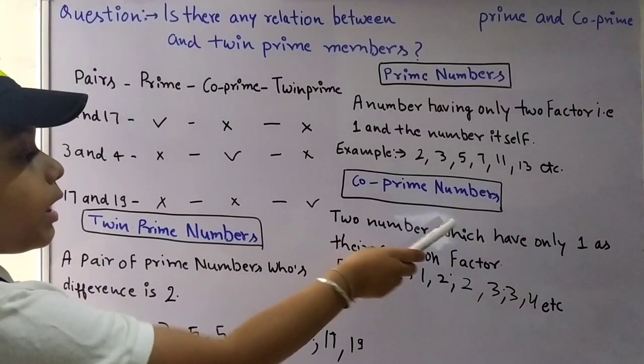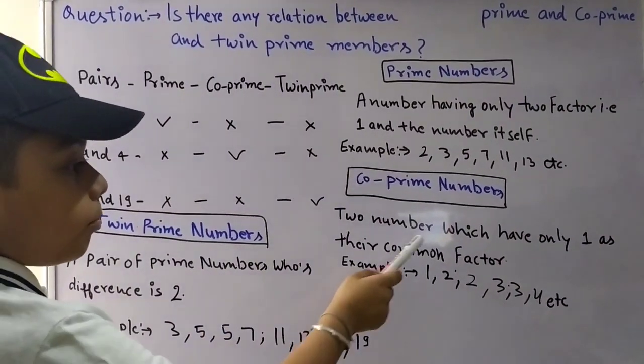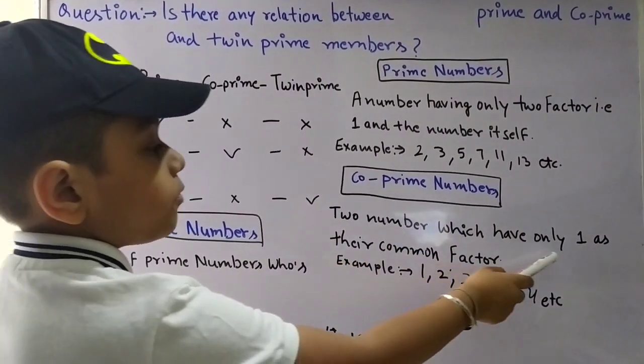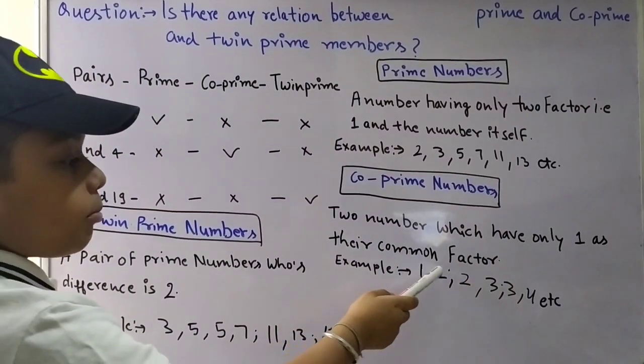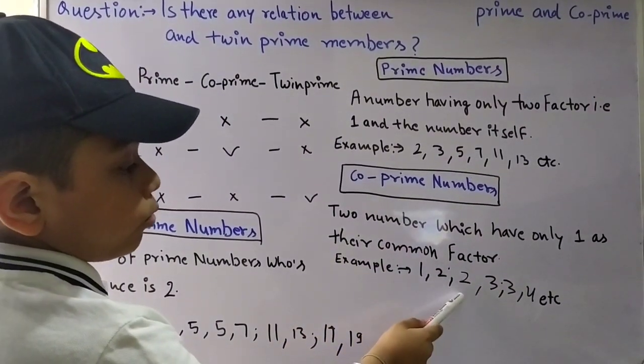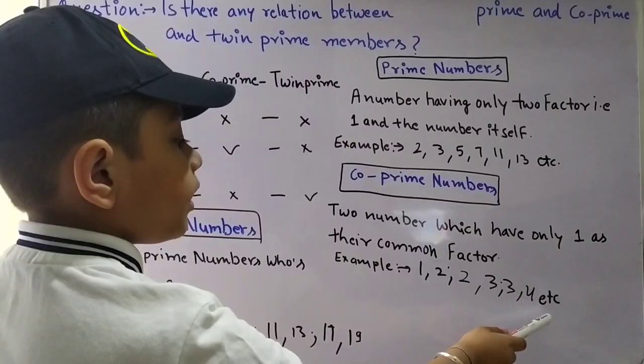Co-prime numbers: two numbers which have only 1 as their common factor. Example: 1, 2, 2, 3, 3, 4, etc.